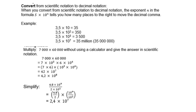Multiply 7,000 by 60,000 without using a calculator and give the answer in scientific notation. First convert each one: 7,000 is 7 times 10 to the power of 3, and 60,000 is 6 times 10 to the power of 4. Then multiply: 7 times 6 is 42, and 10 to the power of 3 times 10 to the power of 4 is 10 to the power of 7. But remember the comma must still move 1 space to the left, so the answer is 4.2 times 10 to the power of 8.